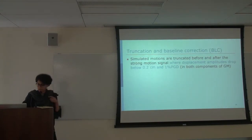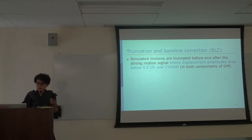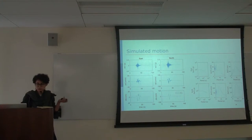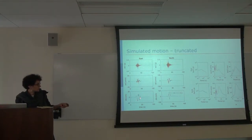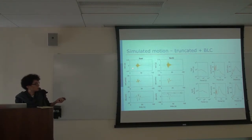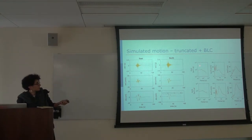Now, a quick overview of the truncation and baseline correction we're implementing. The simulated motions are truncated before and after the strong motion signal, where the displacement amplitudes drop below 0.2 centimeters and below 1% of the peak ground displacement in both components. The truncation results in non-zero displacements at the end of the motion, which is not realistic. So we apply a baseline correction by fitting a fifth-order polynomial and removing it from the signal, ending up with the corrected signal which is very similar to the original one. This brings the displacement back to zero and does not really affect the response spectrum.